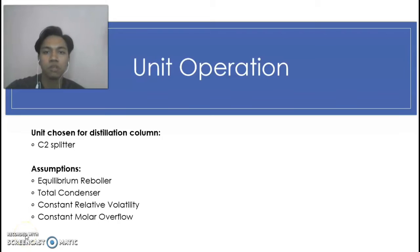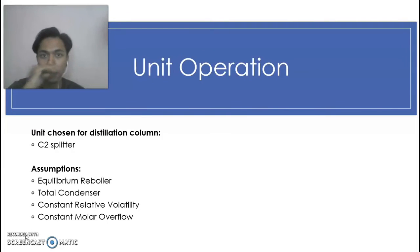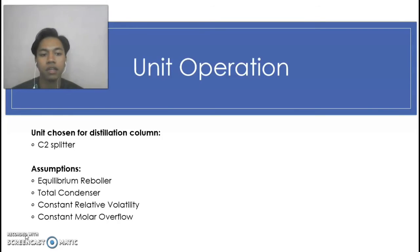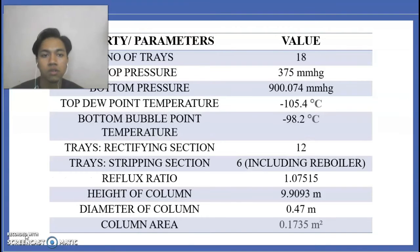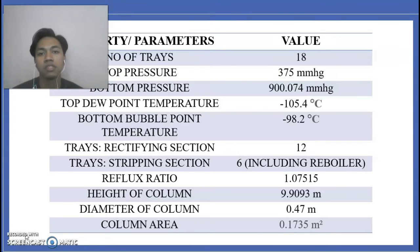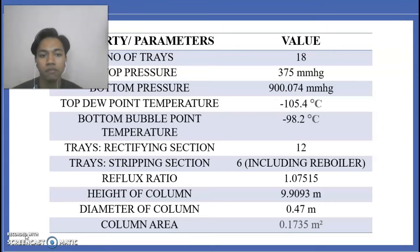My name is Muhammad Iqmal Haziq bin Kharul Anwar, metric number 199078. Today I am going to continue the explanation in our IDP project, which is the unit operation part. The unit we chose for the distillation column is the C2 splitter. C2 splitter is a binary unit which splits ethylene from other components. There are four assumptions: equilibrium reboiler, total condenser, constant relative volatility, and constant molar overflow. The properties and parameters for our C2 splitter are: 18 trays, 375 mmHg top pressure, and 900.074 mmHg bottom pressure. Top dew point temperature is negative 105.4 degrees Celsius and bottom bubble point temperature is negative 98.2 degrees Celsius.